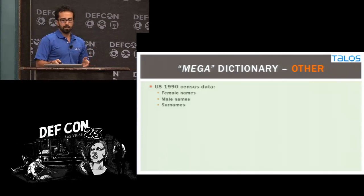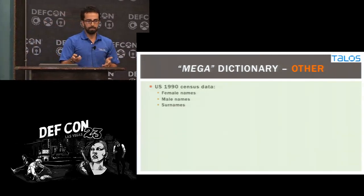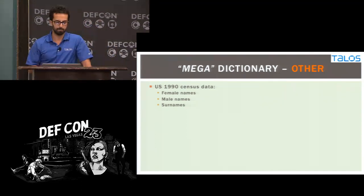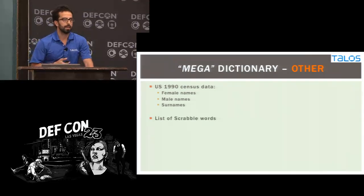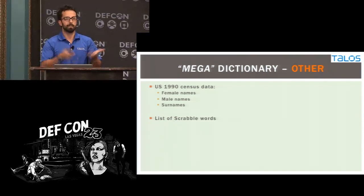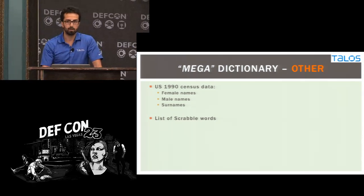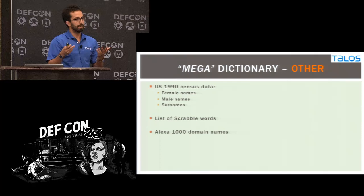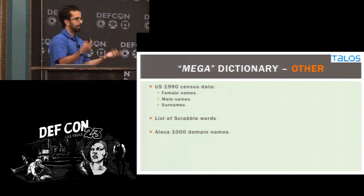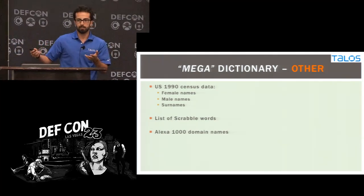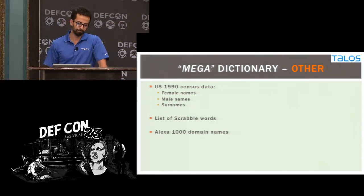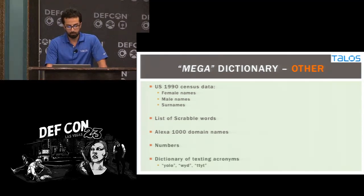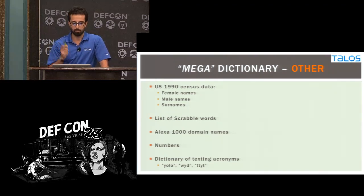I also get names based on census data: female names, male names, and surnames. I also get a list of Scrabble words — these are words not necessarily in the English dictionary; there could be acronyms here. These two items were given to me by my good friend and former colleague Adam Katz, and they helped a lot. Next, I get the Alexa 1000 domain names and add them to my word list — words like Yelp or eBay might not be in any dictionary but are important. I've also got a dictionary of texting acronyms: YOLO, TTYT, BRB, things like that.